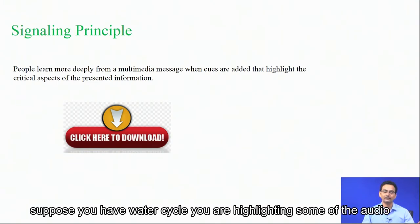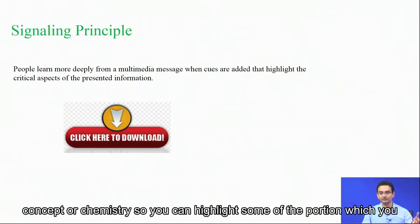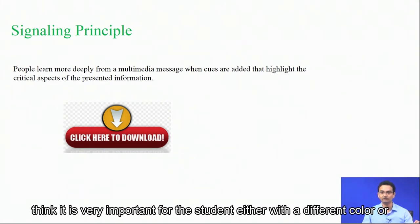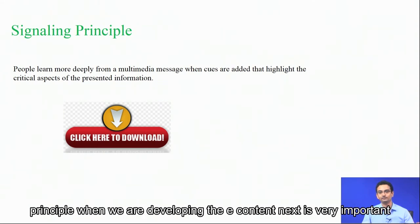Suppose you have a water cycle or you are teaching some kind of chemical concept or chemistry. You can highlight some portion which you think is very important for the student, either with a different color, a larger font, or anything you think works. This is a very important principle when we are developing e-content.